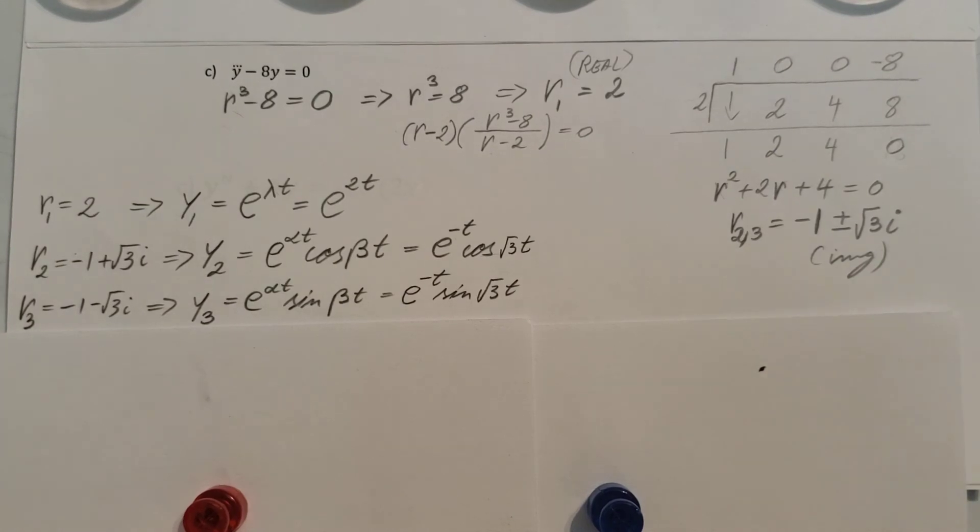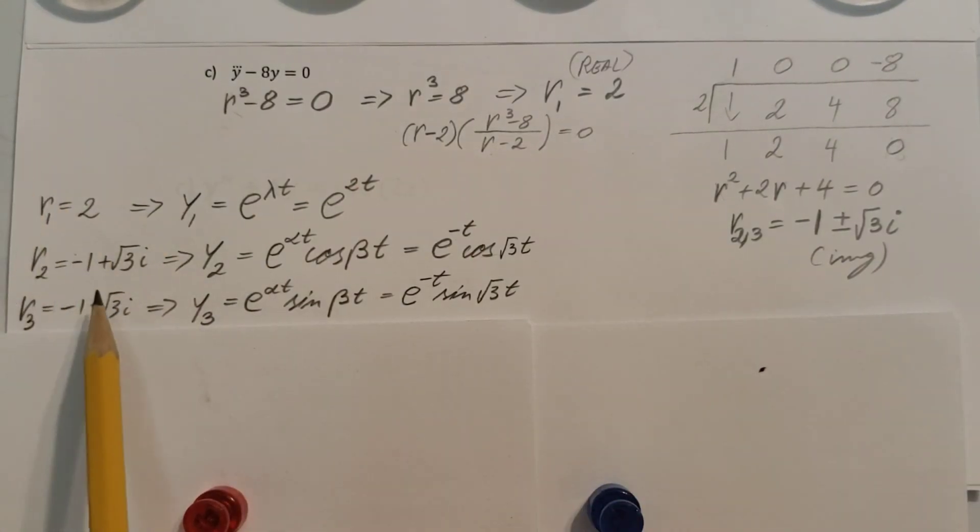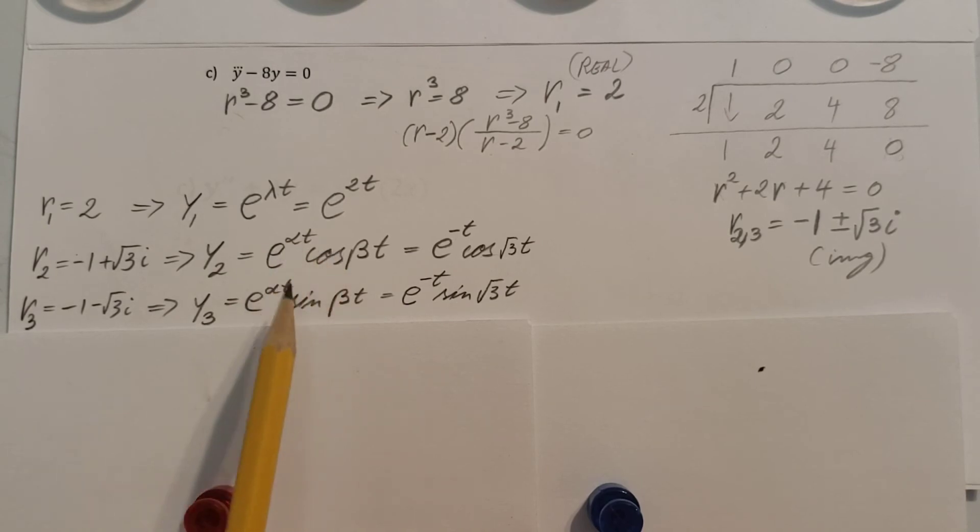Now for the conjugate with the minus, we're going to use almost the same one, but instead of cosine we have a sine. So alpha will be the negative 1, just like we had, so e to the negative t, and sine beta t will be my square root 3. We leave the negative away, that's why we're using the sine, so sine square root 3t.